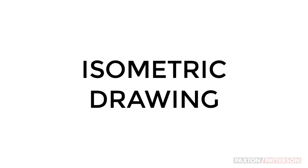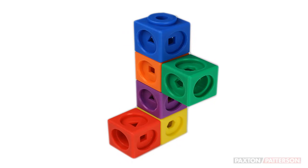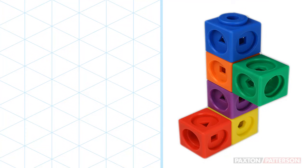An isometric drawing is used to represent an object in three dimensions with the object tilted forward on the front corner. Isometric graph paper is helpful because the lines that are normally drawn horizontally will instead be drawn at 30 degree angles.